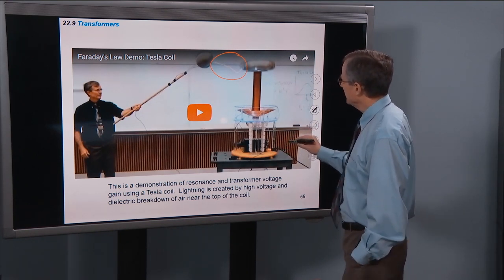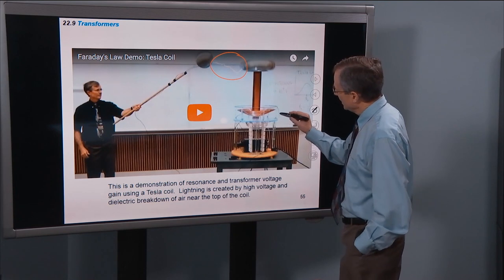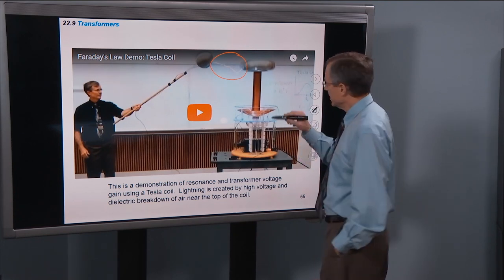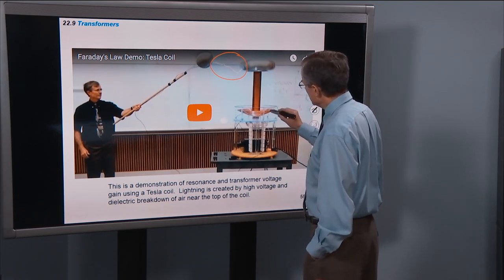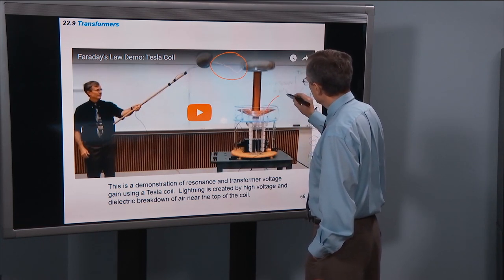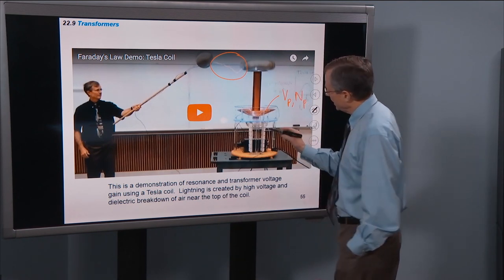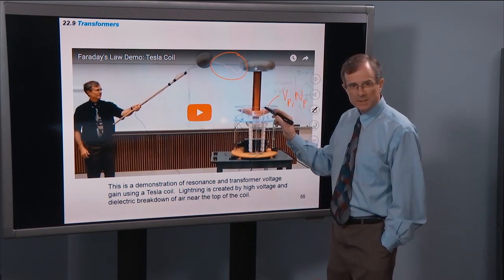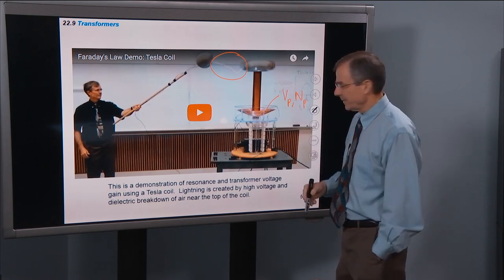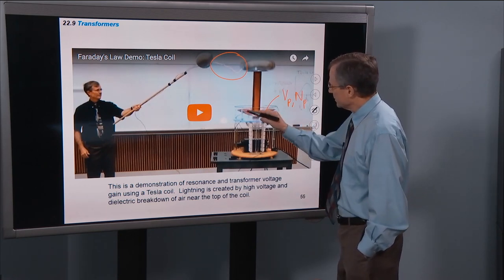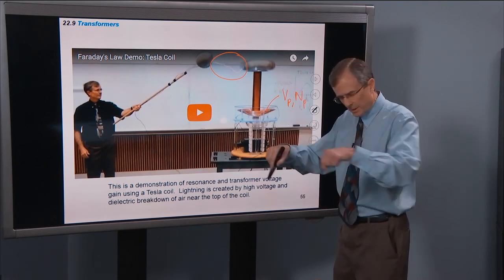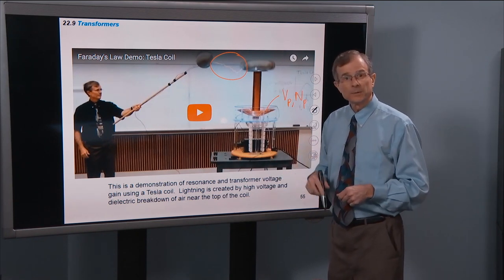And what happens is that there's, at the very heart of the Tesla coil, is a transformer. And this one, here is the primary, it's a little difficult to see in this image, but you'll see in the video that it has maybe 8 or 10 turns of copper tubing.